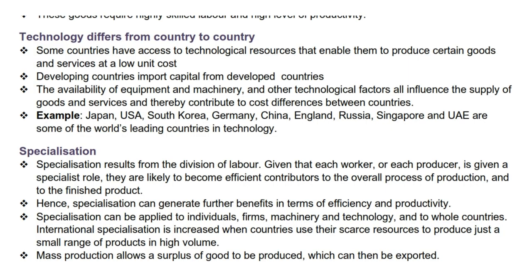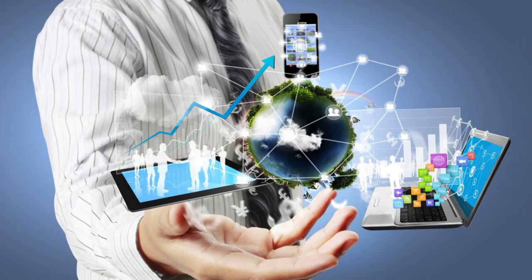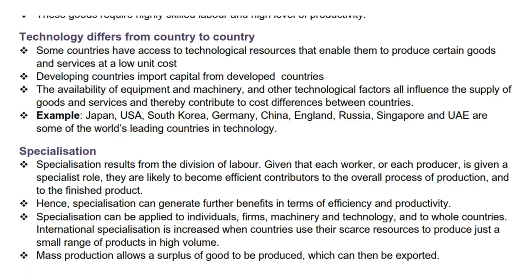The next supply reason is that technology differs from country to country. Some countries have access to technological resources that enable them to produce certain goods and services at a low unit cost. Developing countries import capital from developed countries. The availability of equipment and machinery, and other technological factors, all influence the supply of goods and services and thereby contribute to cost differences between countries. For example, Japan, USA, South Korea, Germany, China, England, Russia, Singapore, and UAE are some of the world's leading countries in technology.